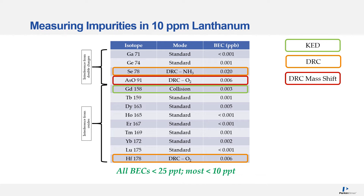Let's start by looking at the impurities measured in 10 ppm lanthanum. Looking at interferences from double charges: gallium and germanium have no interferences and can be used in standard mode. However, selenium is best measured in ammonia DRC mode whilst arsenic is best measured with a mass shift using oxygen DRC mode. Moving on to interferences from oxides, most can be measured in standard mode. However, gadolinium needs to be measured in collision mode and hafnium in DRC oxygen mode. All BECs were below 25 ppt and most were below 10 ppt.